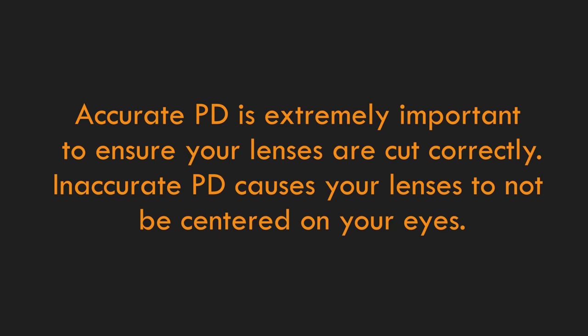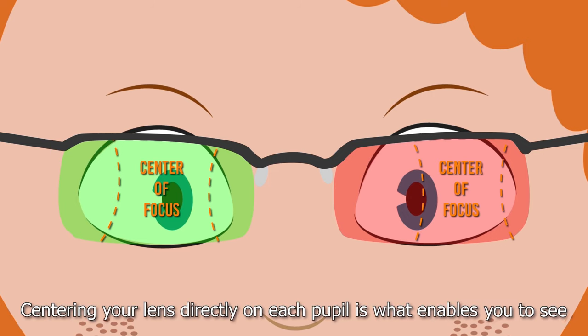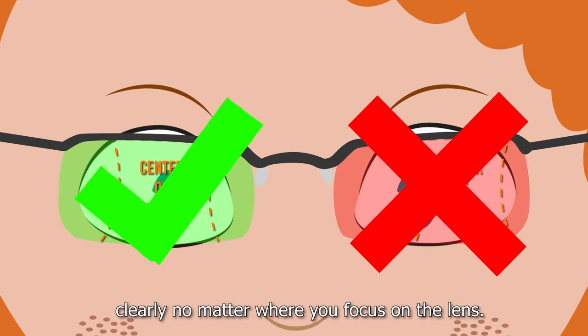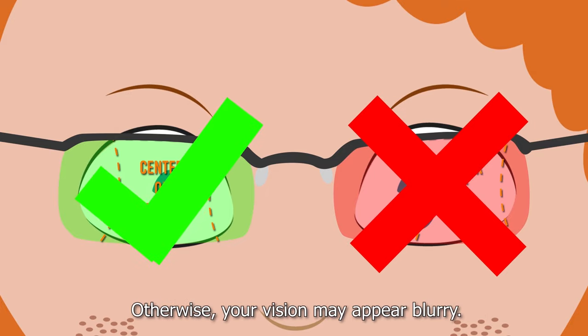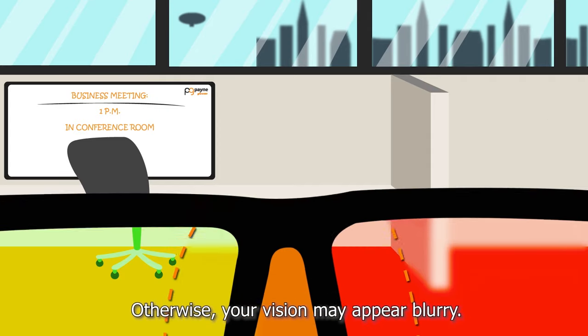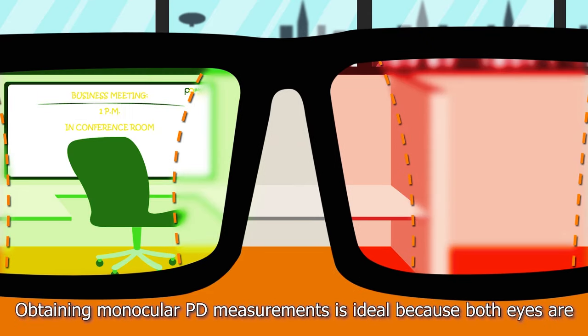Accurate PD is extremely important to ensure your lenses are cut correctly. Inaccurate PD causes your lenses to not be centered on your eyes. Centering your lens directly on each pupil is what enables you to see clearly no matter where you focus on the lens. Otherwise, your vision may appear blurry.